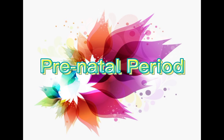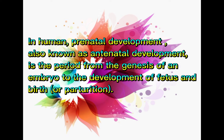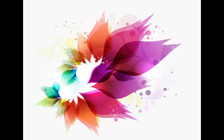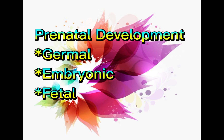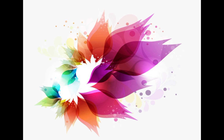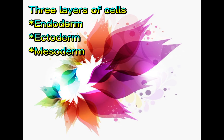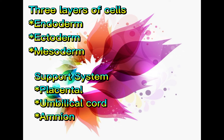Prenatal Period: Prenatal development, also known as antenatal development, is the period from the genesis of an embryo to the development of a fetus at birth or parturition. Prenatal development is divided into three periods: germinal, embryonic, and fetal. The embryonic period emphasizes three layers of cells — the endoderm, ectoderm, and mesoderm. Life support systems with a vital role in supporting the baby inside the womb include the placenta, umbilical cord, and amnion.